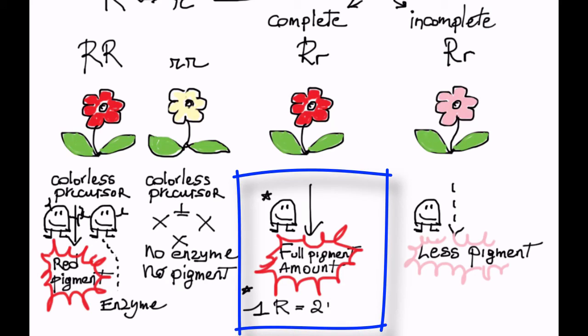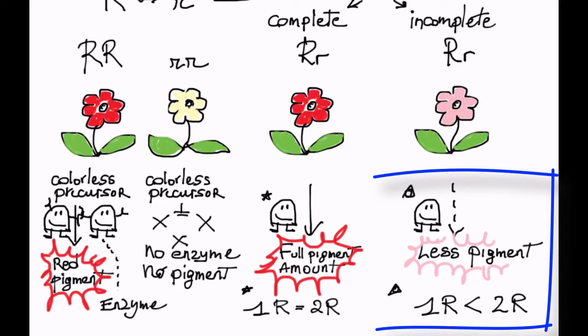Summarizing, with complete dominance, one dose of the dominant allele is equal to two doses. With incomplete dominance, one dose does less than two doses. We call the latter system dosage sensitive.